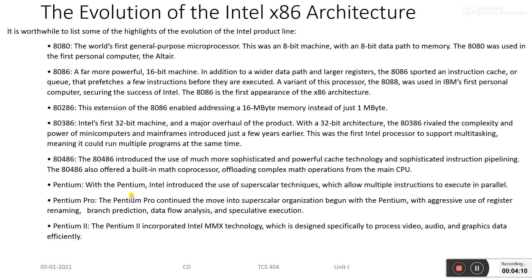The 486 was also offered with a built-in math co-processor, offloading complex math operations from the CPU. The Pentium is another processor that many people used in the last decade. Intel introduced superscalar techniques, which allow multiple instructions to execute in parallel. The Pentium Pro continued to move the superscalar organization forward, with aggressive use of register renaming, branch prediction, and data flow analysis and speculative execution.